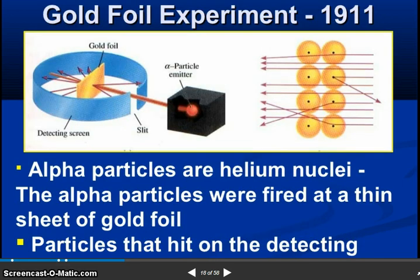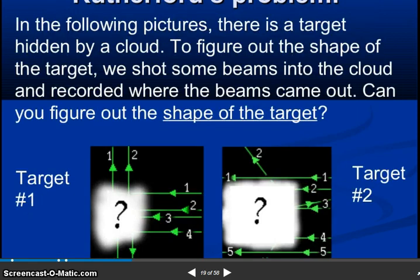So Rutherford's gold foil experiment in 1911. So gold foil you can see and detector at the slit and alpha particles emitted. So alpha particles are helium nuclei. The alpha particles were fired at a thin sheet of gold foil. Particles that hit on the detector.